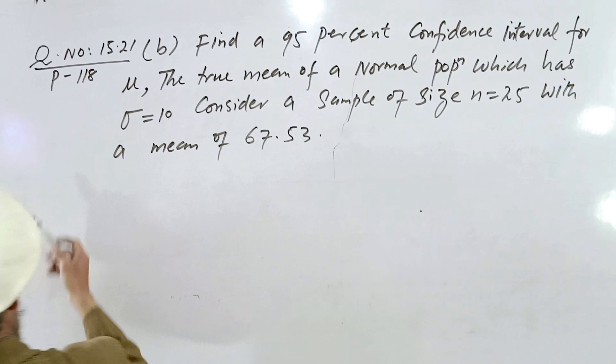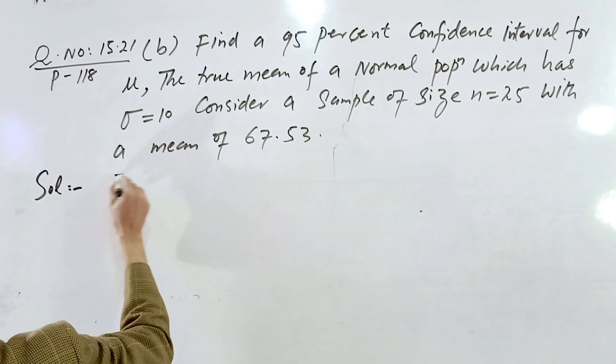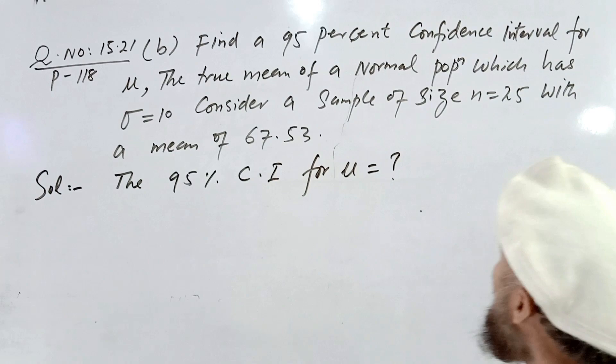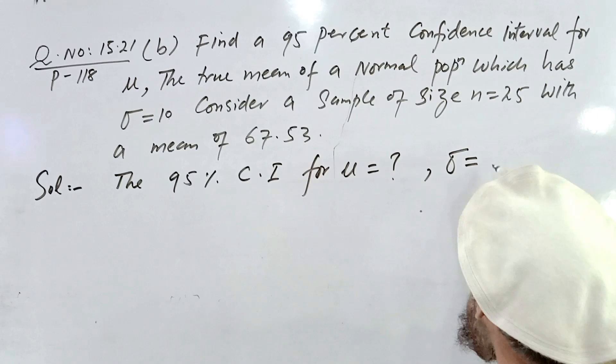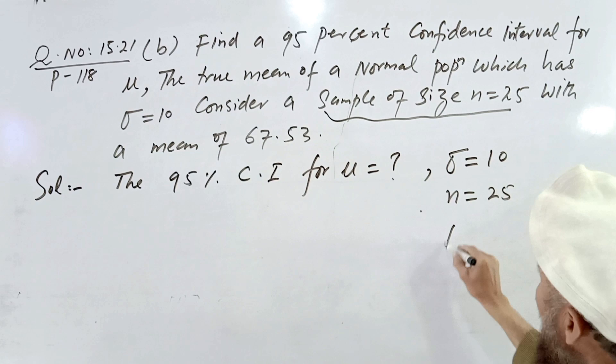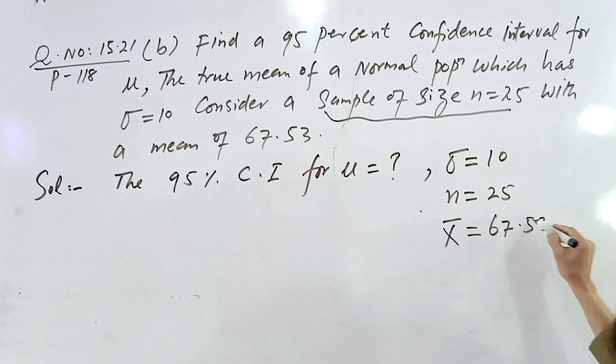First of all, we write the given data. The 95% confidence interval for population mean is required. Sigma, the standard deviation, is known and equal to 10. The random sample size is n equal to 25, and the sample mean X-bar is equal to 67.53.